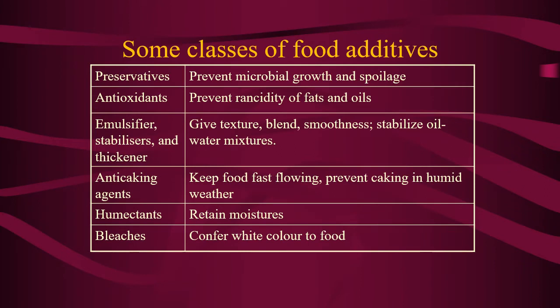Food additives can be divided into six different classes. The first class is preservatives, which function to prevent microbial growth and spoilage. The second class is antioxidants, used to prevent rancidity of fats and oils — in Malay we say 'minyak berbau tengek,' which is one example of rancidity of fats and oils.